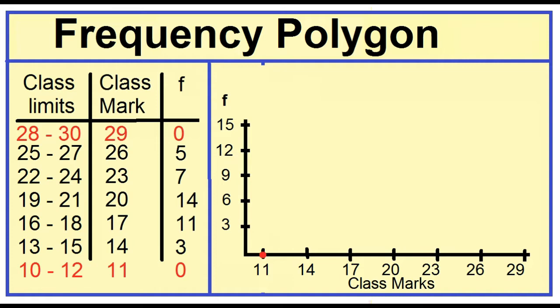Fifth, mark a dot above the class mark of each class at a height equal to the frequency of that class. For example, when the class mark is 11, the frequency is 0. Mark the dot at 11, 0.